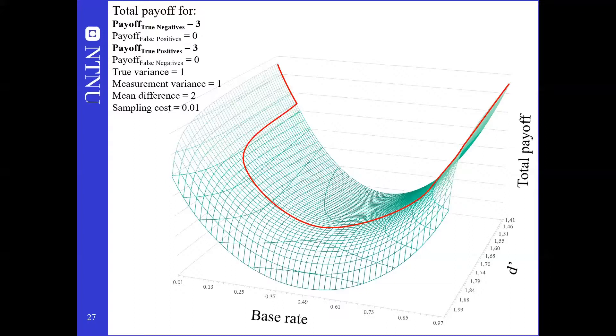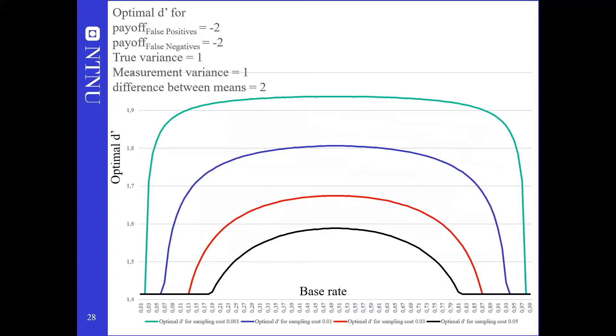This graph shows the case of symmetric payoff. To simplify the graph, let's look at only the optima. Here the optimal d' is charted across a large range of base rates. In this example payoff is still symmetrical though the different lines have different sampling costs. As we see for sufficiently low and high base rates it's enough to sample minimally. Investment in further sampling is more often worthwhile for intermediate base rates. Both the range of base rates over which sampling is worthwhile and the optimal investment in sampling increase as sampling cost decreases.